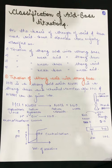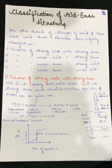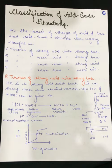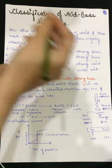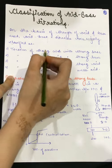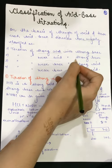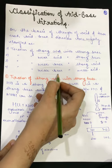In this video we are going to study about classification of acid-base titration. In acid-base titration we are doing quantitative analysis of an acid or quantitative analysis of a base. Depending upon the strength of the acid and base, acid-base titrations are majorly classified into four types: strong acid with strong base, weak acid with strong base, weak base with strong acid, and weak base with weak acid.